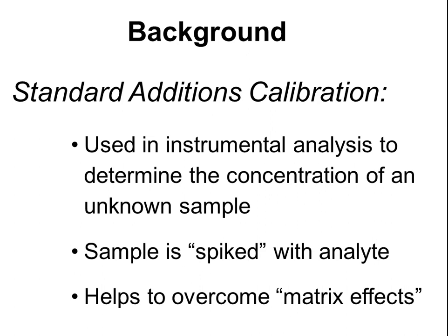Within any sample in analytical science, we have the analyte, which is the component we're interested in identifying or quantifying. By definition, everything else is the matrix. So we decide what the analyte is going to be, and then anything else in there is referred to as the matrix. Those matrix components can have an effect on the instrument response to the analyte. But by calibrating with the sample and the matrix present in each of the standards, it helps to overcome matrix effects.